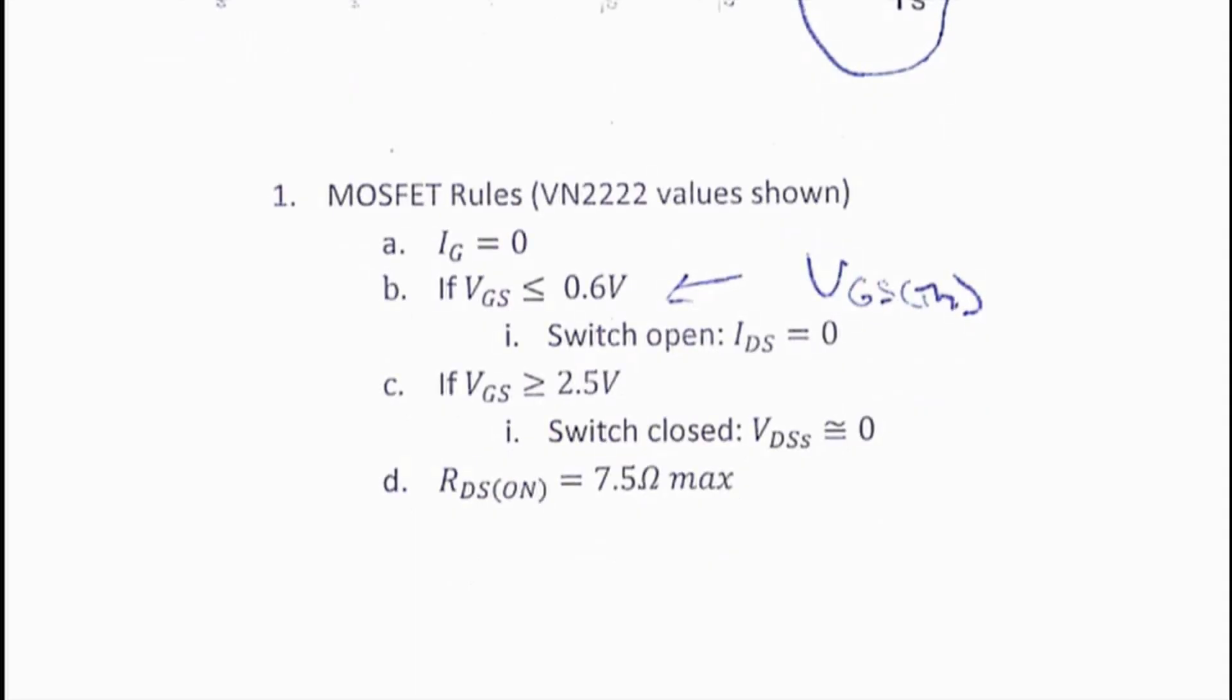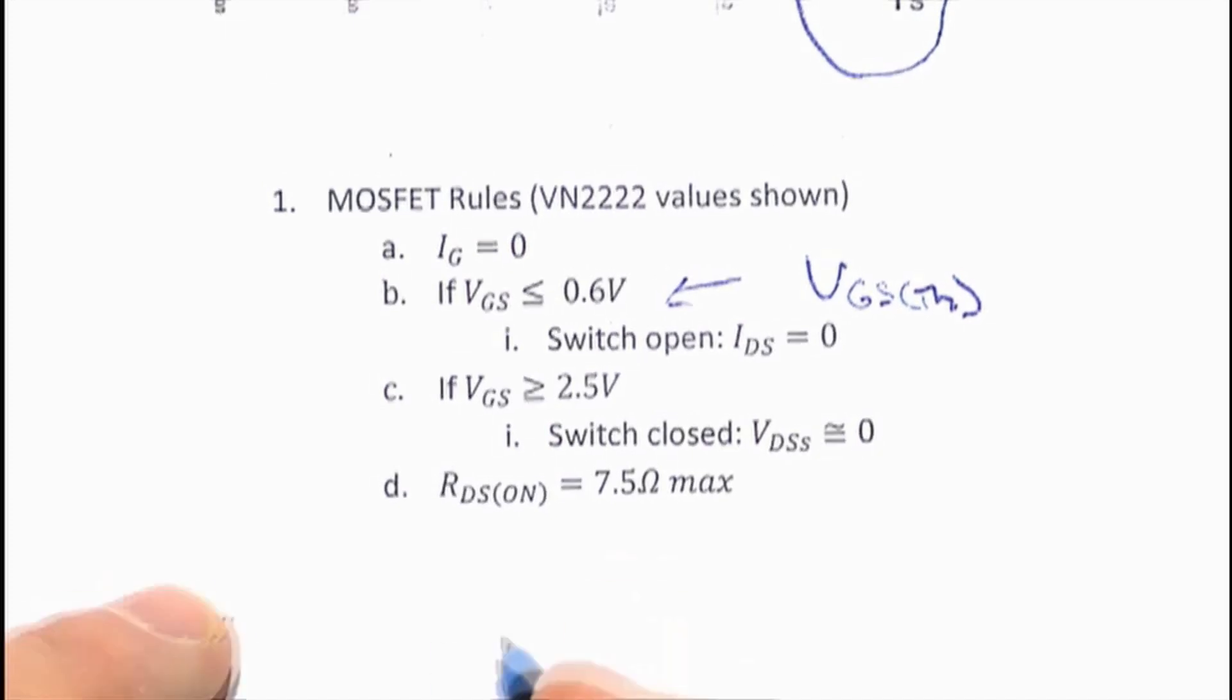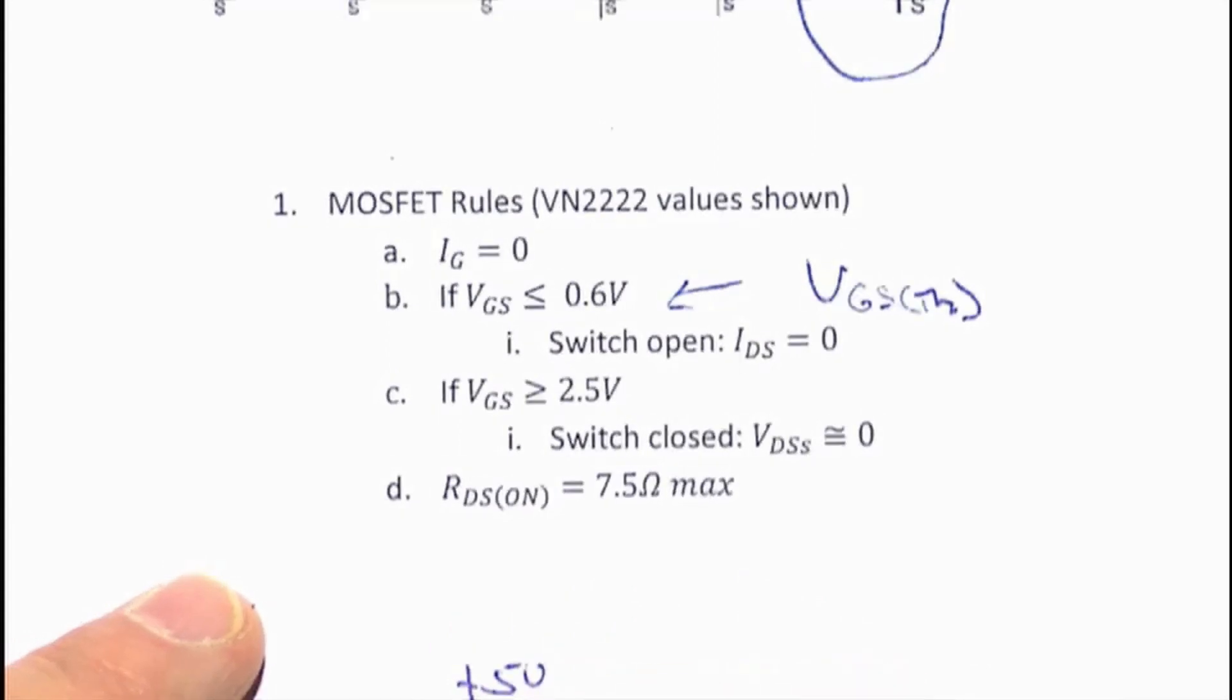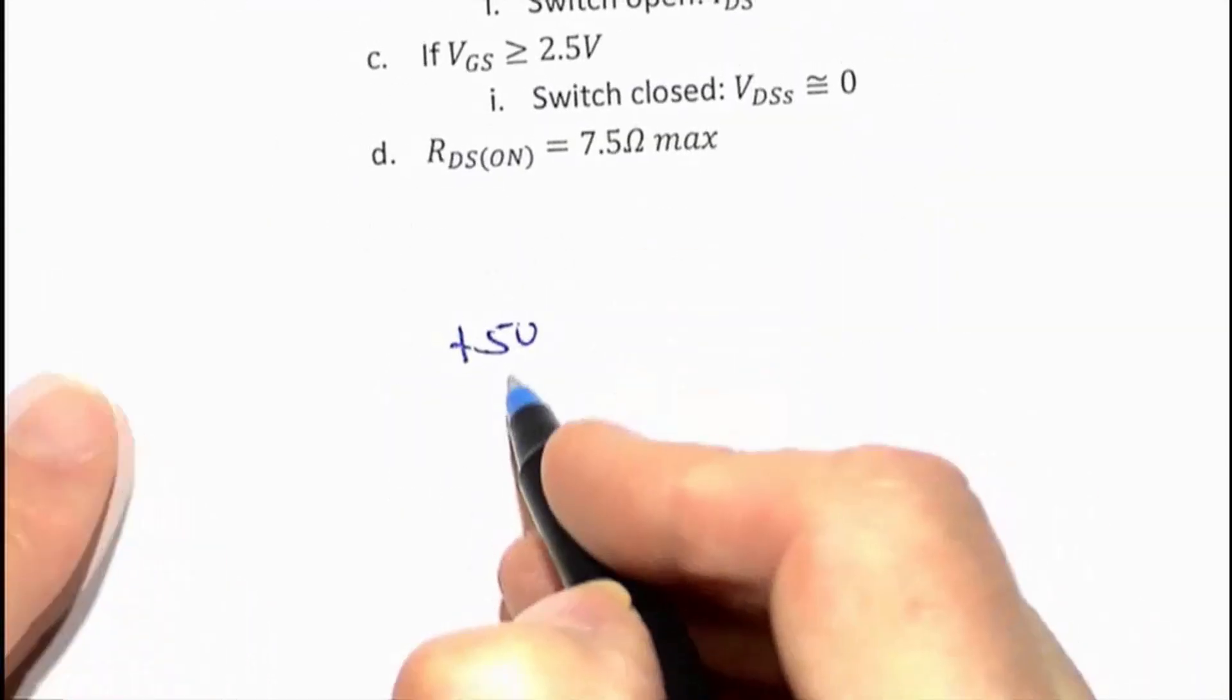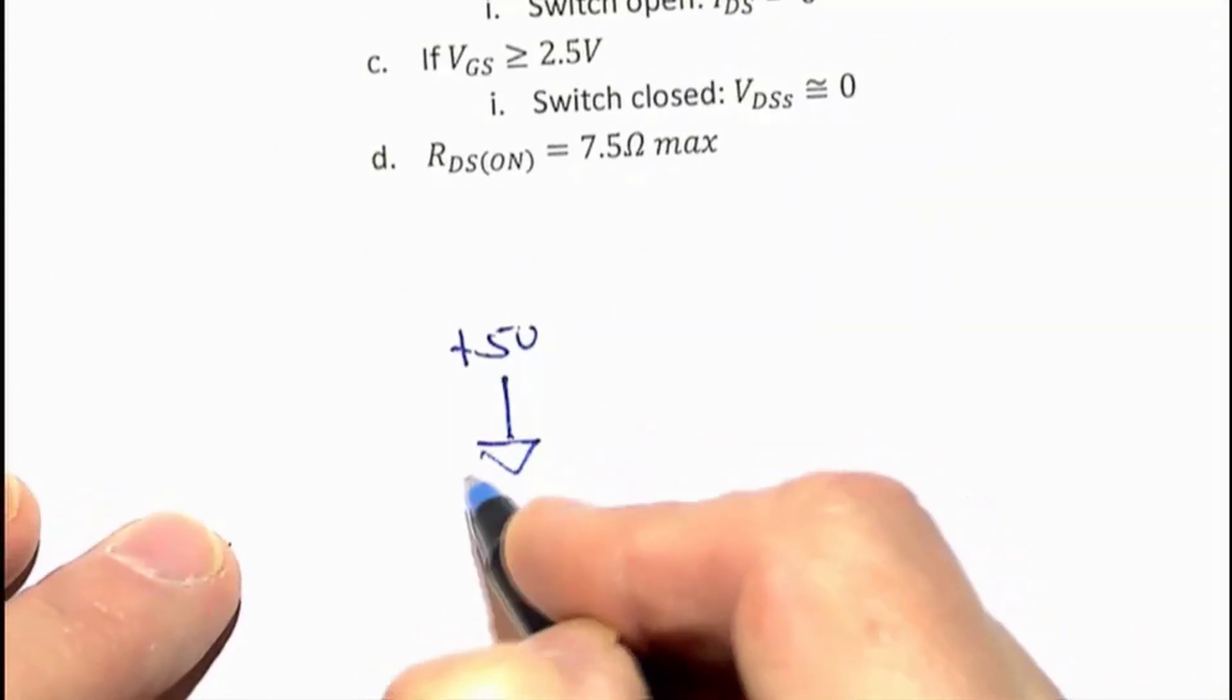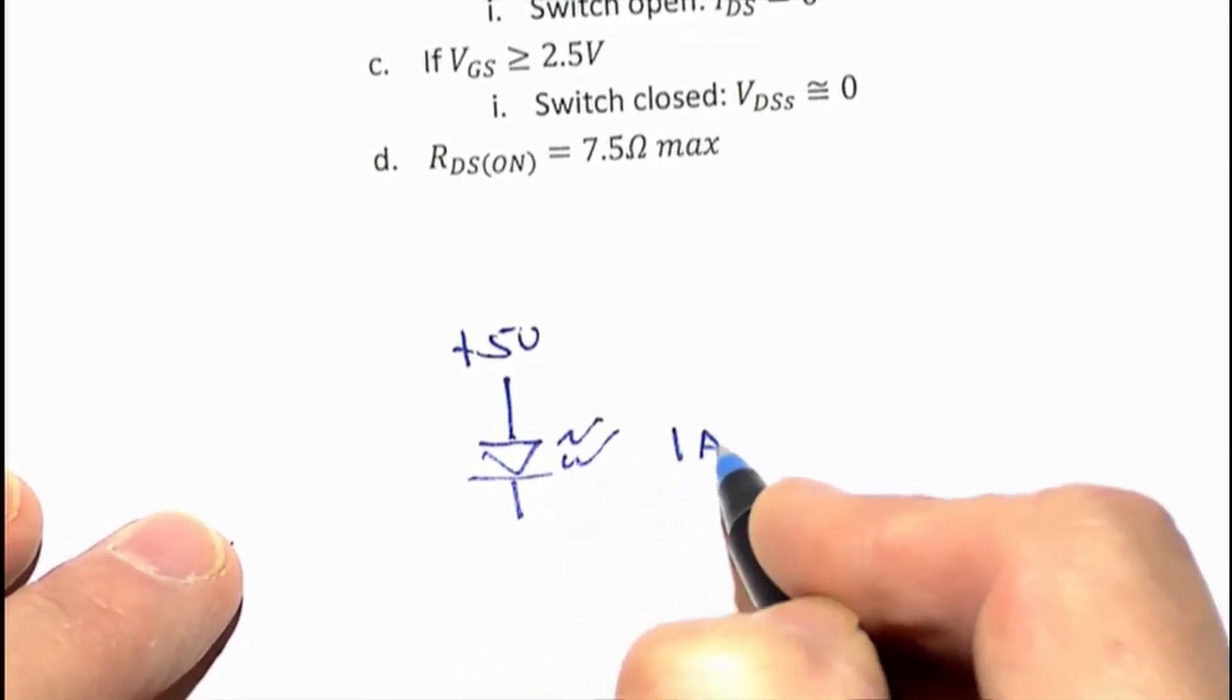I happen to have a power MOSFET here, and here's the circuit I've got. I have a really nice, bright, I think it's a one-amp LED.